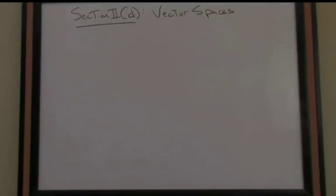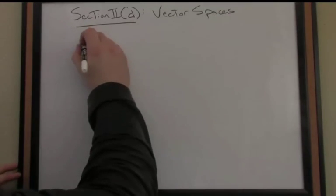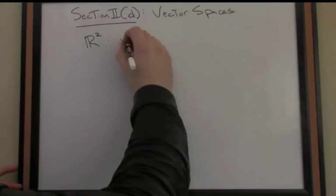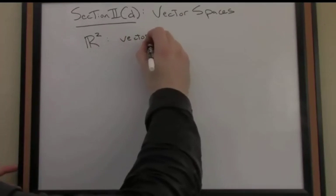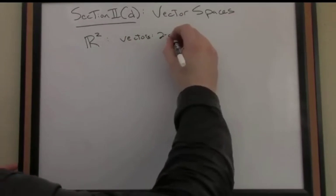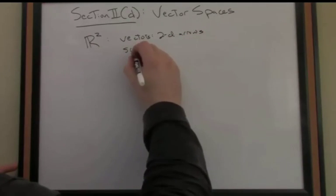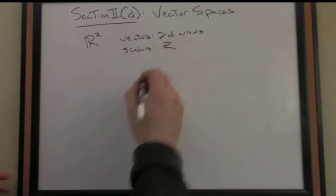An example of a vector space, and we've already seen a few examples, a common one would be R2. For R2, my set of vectors consists of two-dimensional arrows in the plane, and my set of scalars is the set of reals.